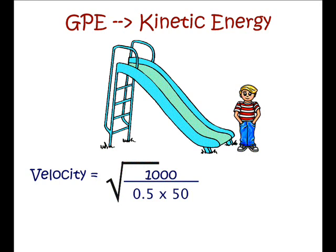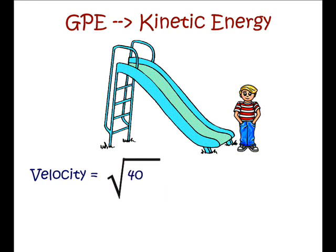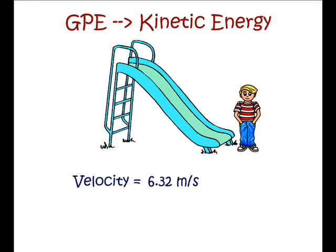It's important to do one step at a time, rather than try and do it all at once. So I'll do the half times 50 first, which is 25. So now I have the square root of 1,000 divided by 25. 1,000 divided by 25 is 40, so I have the square root of 40. That gives a final answer of velocity equals 6.32 meters per second. Again, remember to include those units.